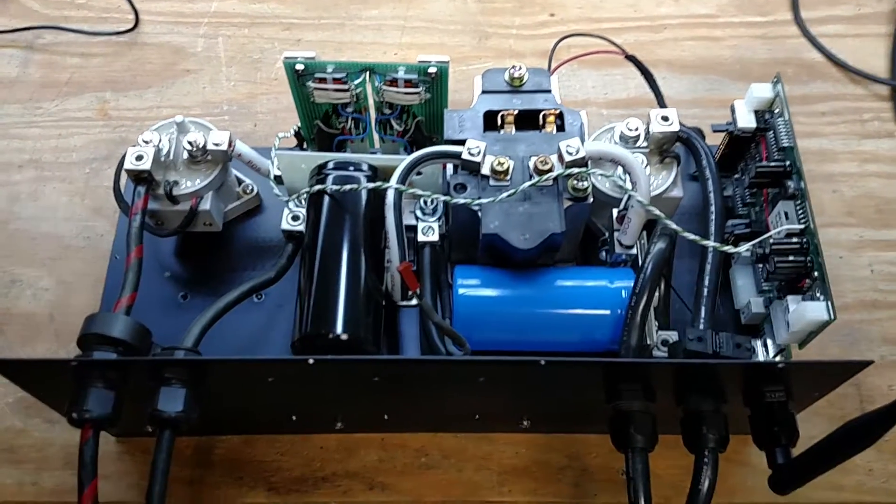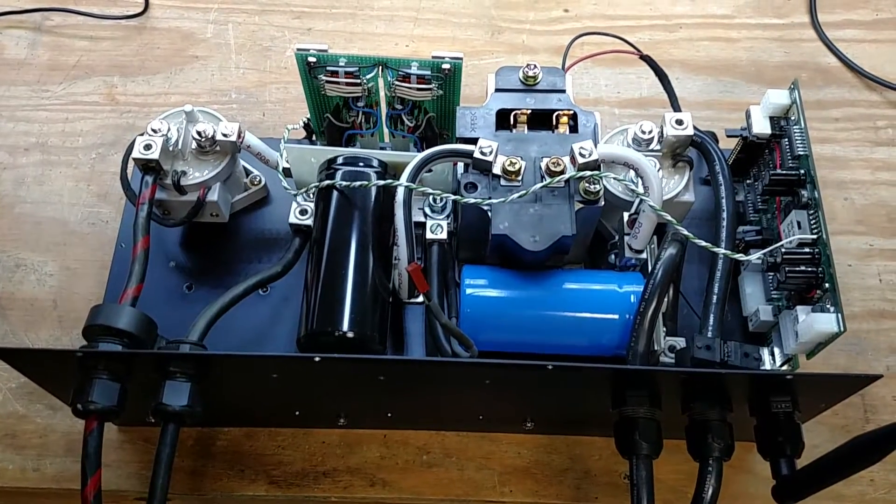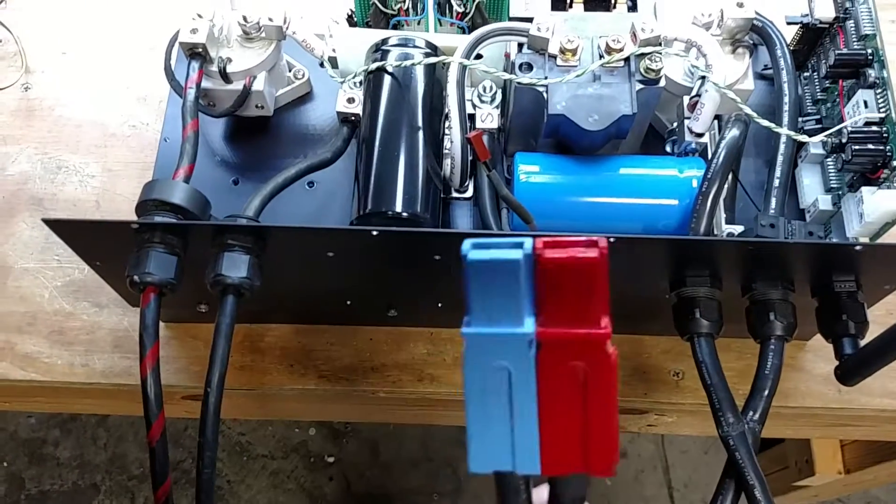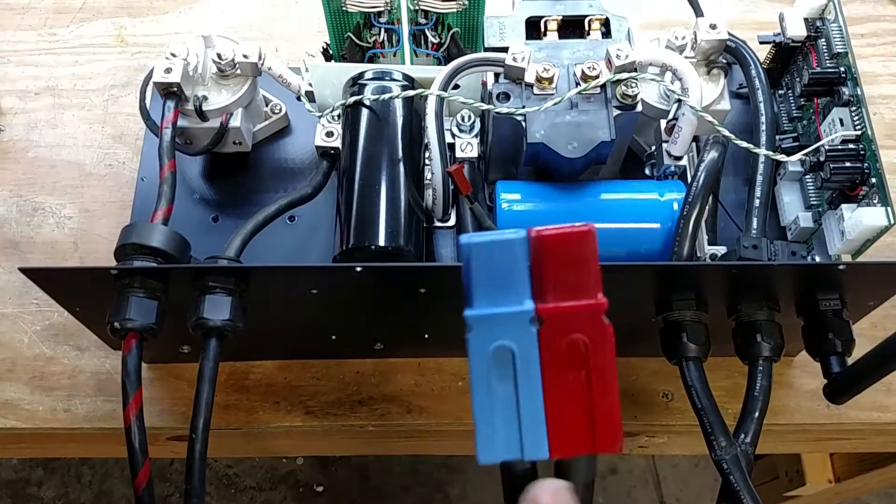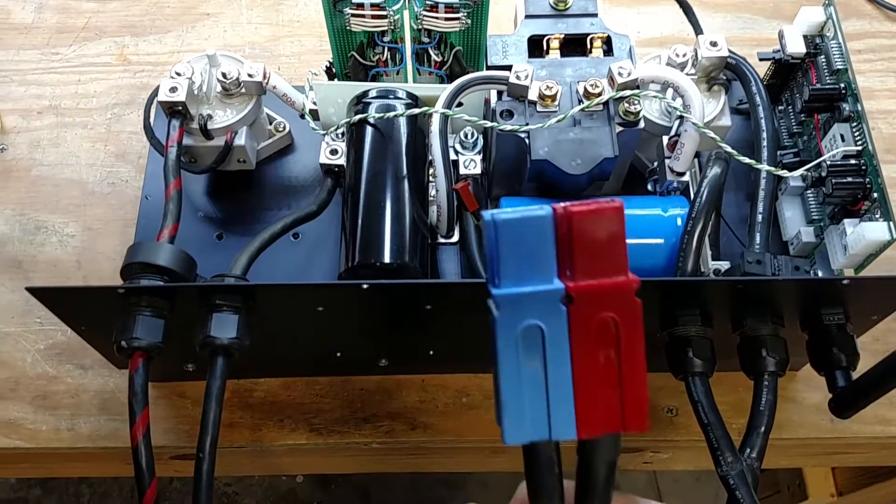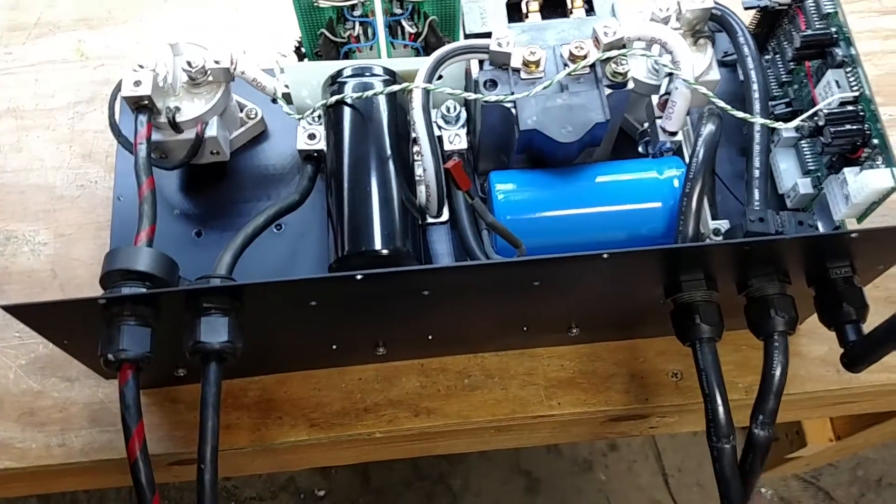Hello, welcome to today's video. I've been working on the high current wiring for the bidirectional buck boost converter. I've got connectors on here now. So this would be the battery pack coming in. Red's positive, blue is negative. I didn't have a black Anderson power pole connector, so that's what we ended up with.